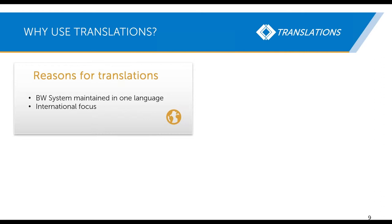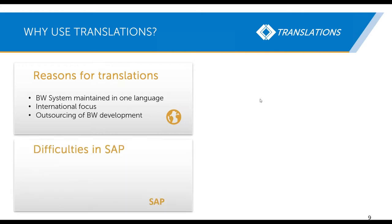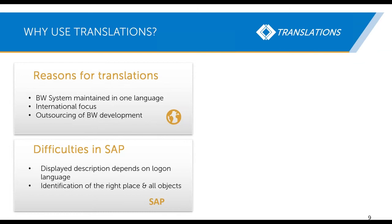And if you do it manually, there are a lot of difficulties in SAP. For example, if you log in to a subsystem, SAP only shows you the descriptions of the log-on language. So if you want to translate into three languages, you have to perform three log-ins with different languages. Another problem is that you have to identify all the right places of the object — for example, is the description info provider specific or object specific? You have to identify all the right levels where the description was maintained. So you have a huge manual effort and it's extremely time consuming. These difficulties can be eliminated with Translations.